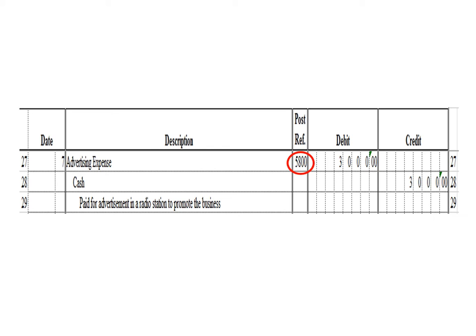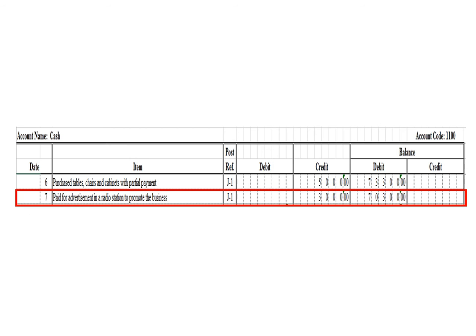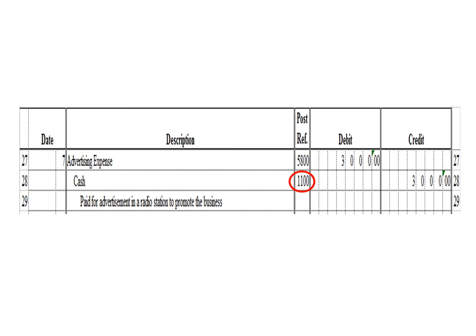Let us post the credit entry — a credit to cash for $3,000. To post in the cash ledger, we write date 7, description: paid for advertisement in a publication to promote the business, posting reference J1. Under the credit column, write 3,000 pesos. The balance is 70,300 pesos — we deduct the credit 3,000 from the previous debit balance of 73,300. As of March 7, the cash ledger balance is 70,300 pesos debit. After posting, write posting reference 1100.